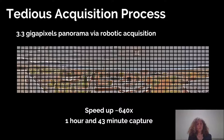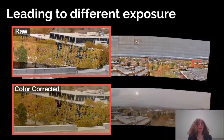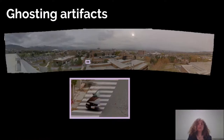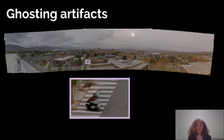It takes more than often more than days to get those images in this very hard and tedious process. In the process, you also have some change in exposure because it's a long acquisition. And you can see that even with the color correction you can perform, you still have some natural color variations. Additionally, with moving objects, you can have ghosting artifacts where parts of objects are visible in one image and not in the other because they moved between the two acquisitions.